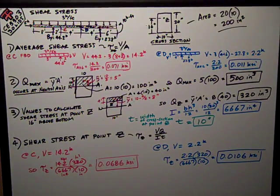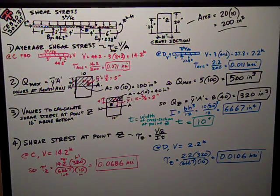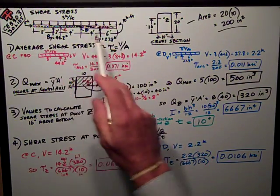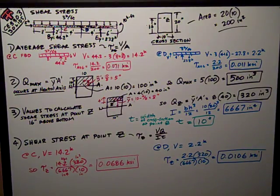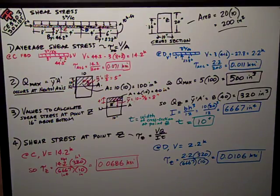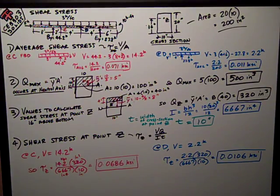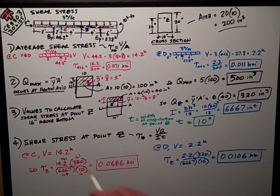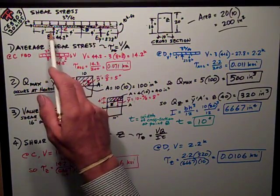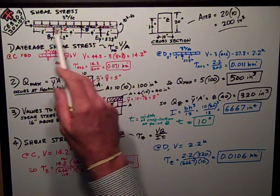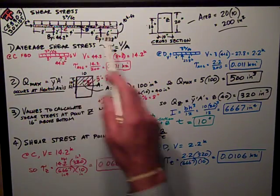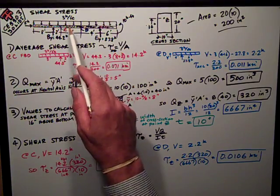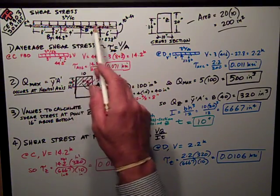Page one had a shear stress problem where we gave you a beam loaded as shown and gave you the cross section. We wanted to know some stresses on that section. The main things you need to know were that we figured the reactions for you, but it was a double cantilever, a cantilever at each end with a three kip per foot load.